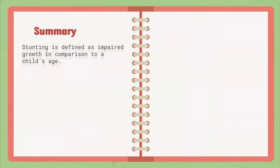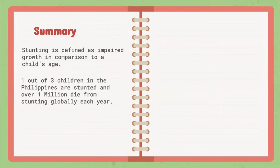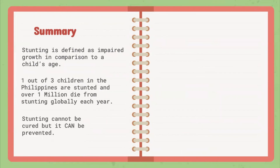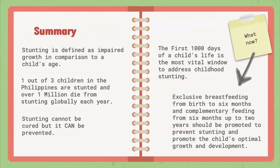In summary, stunting is defined as impaired growth in comparison to a child's age. One out of three children in the Philippines are stunted, and over 1 million die of stunting globally each year. Stunting cannot be cured, but it can be prevented. The first 1,000 days of a child's life is the most vital window to address childhood stunting. Exclusive breastfeeding from birth to six months and complementary feeding from six months up to two years should be promoted to prevent stunting and to promote the child's optimal growth and development.